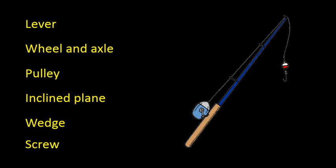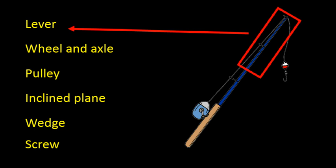Next we have a fishing rod and reel. The rod itself would be an example of a lever. The fishing line wraps around a circle inside of the reel, and that's an example of a pulley.